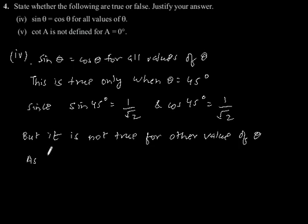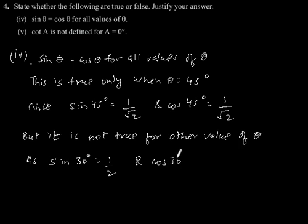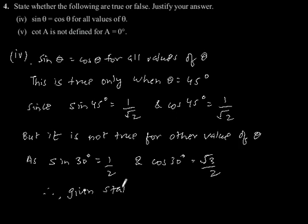For example, sin 30° is equal to 1/2 and cos 30° is equal to √3/2, so they are not equal. Therefore the given statement is false.